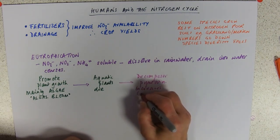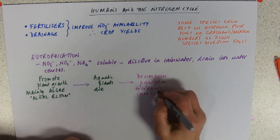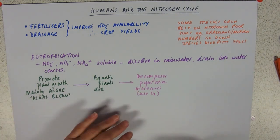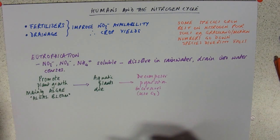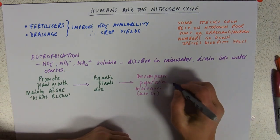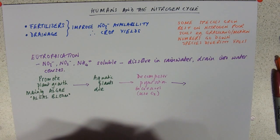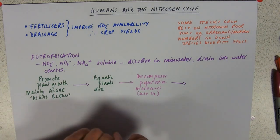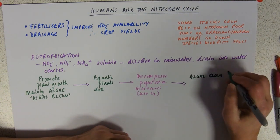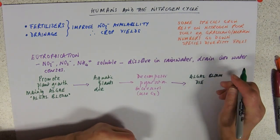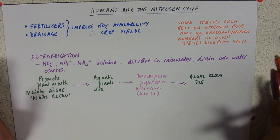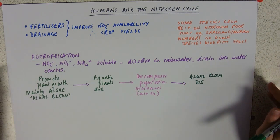Decomposers are aerobic in nature, so they start to use up more oxygen. This isn't too much of an issue initially because the algae at the top are churning out oxygen. The big problem comes when the algal bloom dies — once the algal bloom dies, you start to have difficulties.